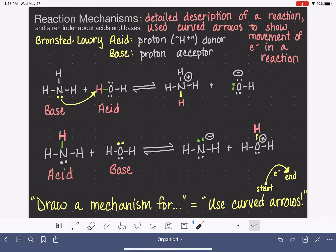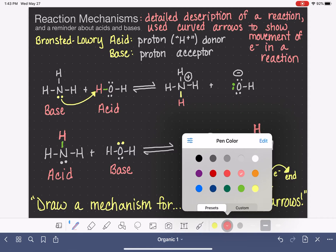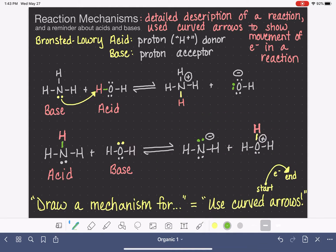What else do we have going on? We have the green bonding electrons between the oxygen and the hydrogen that are being turned into a lone pair on the oxygen. So in that situation, what's happening is the bond itself is breaking and relocating as a lone pair of electrons on the oxygen atom.